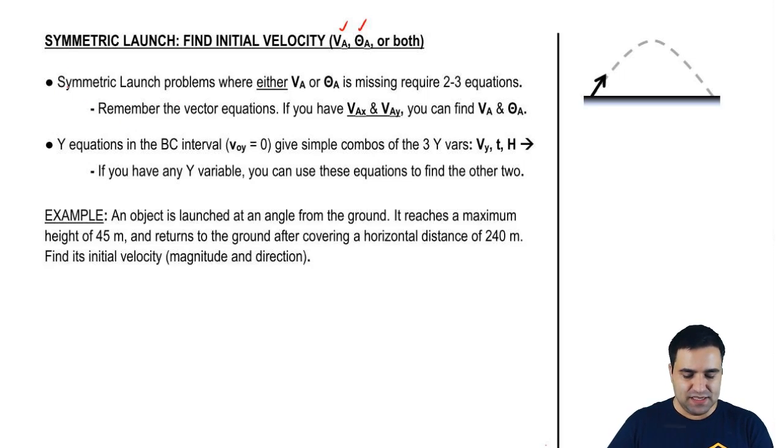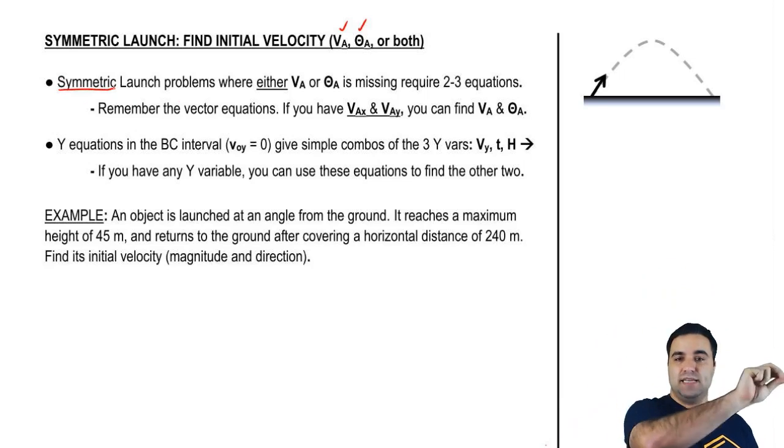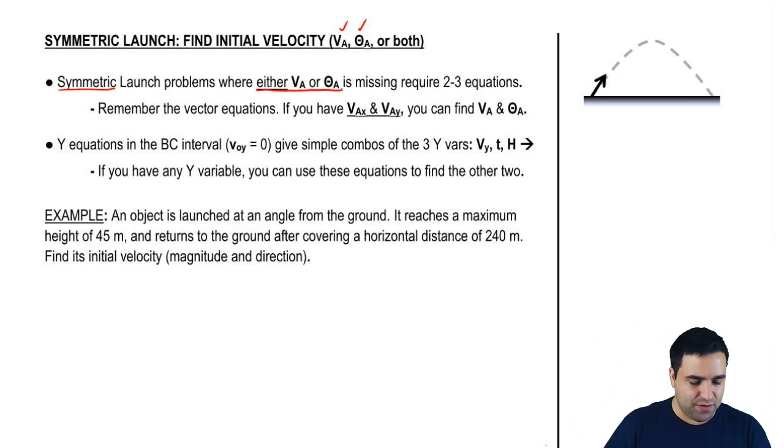So specifically for symmetric launch, remember symmetric is where you start and you come back to the same height. When you're missing either VA or theta A or both, we're going to solve this using a combination of two to three equations. Now the way we're going to solve this is a little bit different from the problems where I'm giving you VA and theta A. So we're going to use a different strategy.